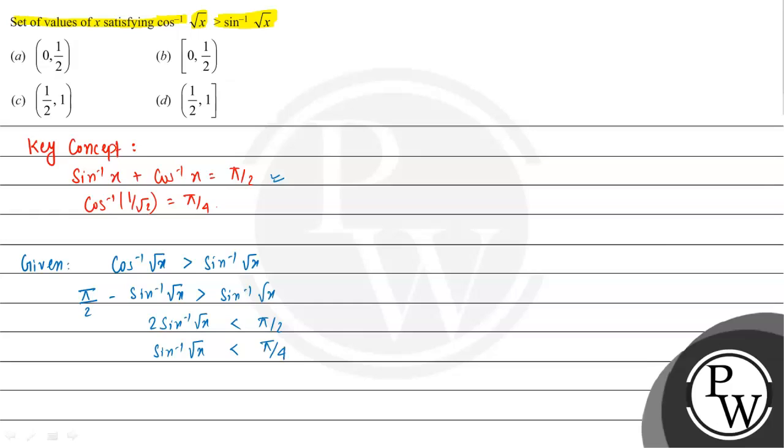So we can say that root x is less than sin of pi by 4, which is 1 by root 2. So we can say that root x should be less than 1 by root 2.